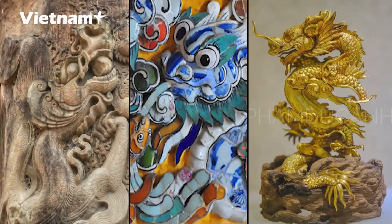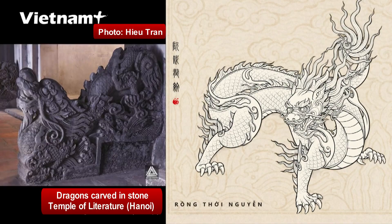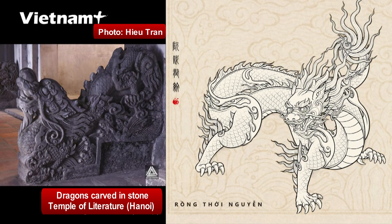This is the result of reconstruction based on surveys, research from documents, stone sculptures, wood carvings, and ancient architecture at historical sites such as pagodas, temples, and royal tombs.